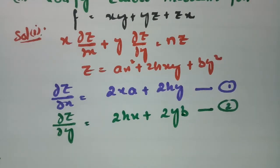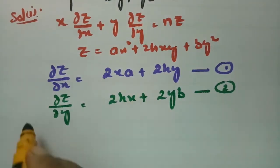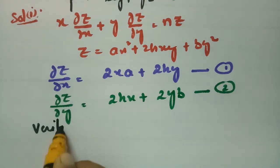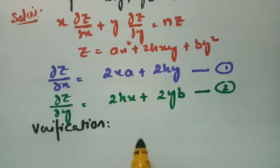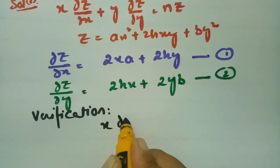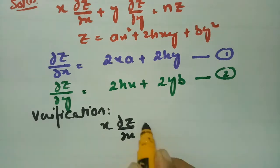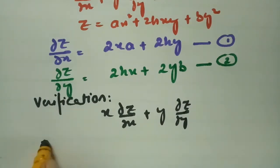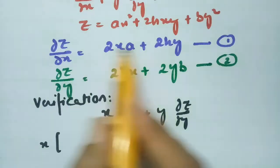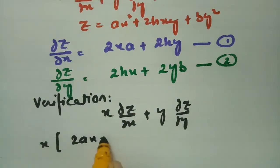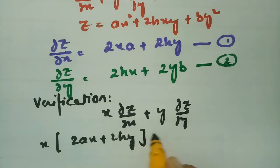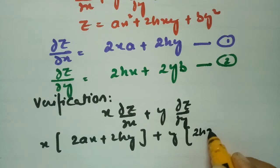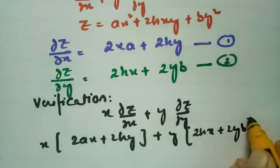Now we have to verify Euler's theorem. For the verification we consider x into ∂z/∂x plus y into ∂z/∂y. So this is x into (2ax plus 2hy) plus y times (2hx plus 2by).